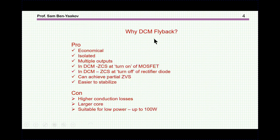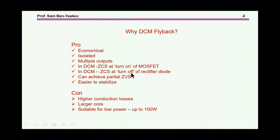The advantages of the flyback converter by itself are that it is an economical topology. It's isolated, so it's very good for offline applications like a cell phone charger. It can be built with multiple outputs, none of which would require a filter inductance. In DCM, we have zero current switching at turn-on, zero current switching turn-off of the rectifier diode, and as I'll show later, we can achieve partial or full zero voltage switching with additional circuitry.